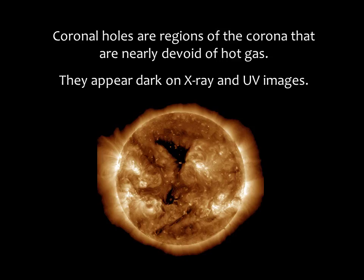In this ultraviolet image of the sun, we can see dark spots called coronal holes. Coronal holes are places where the sun's magnetic field opens up and allows the solar wind — that stream of charged particles — to escape.